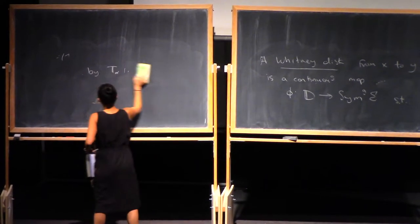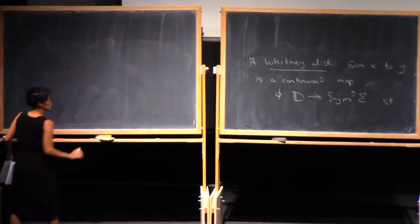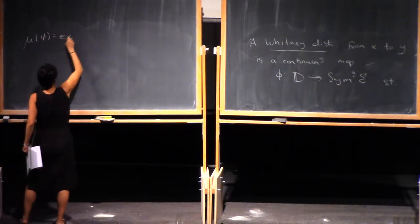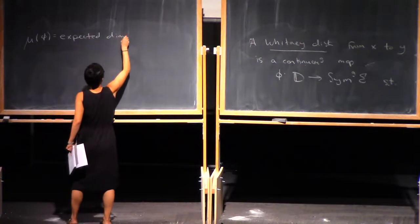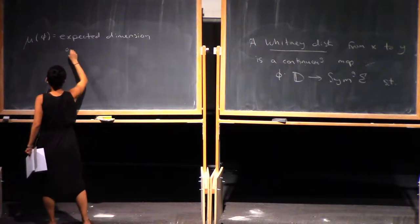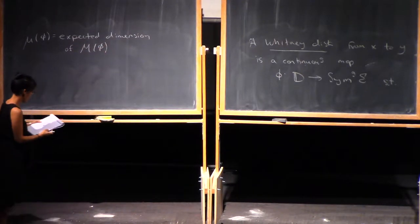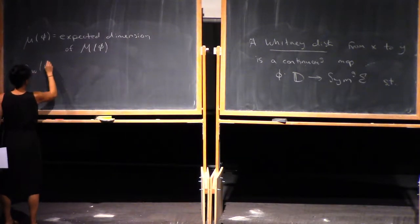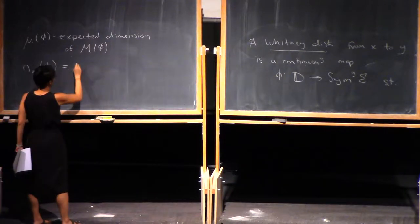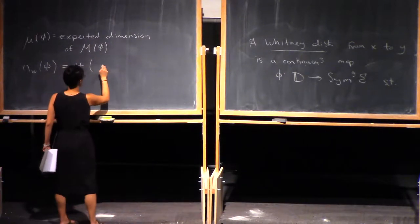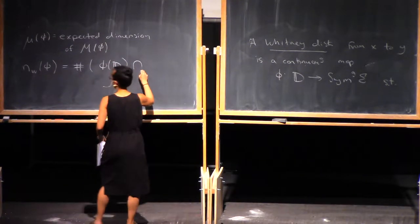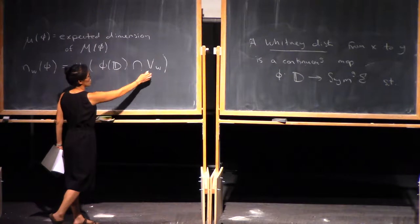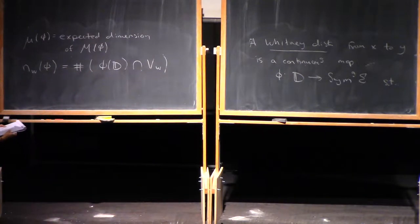That's going to be a smooth manifold, so we can talk about its dimension. We'll write mu of phi to denote the expected dimension of M of phi. And we'll also write n_W of phi to denote the algebraic intersection number between the image of phi and the subspace V_W. This is a codimension-2 subspace, so this is going to be a set of points.